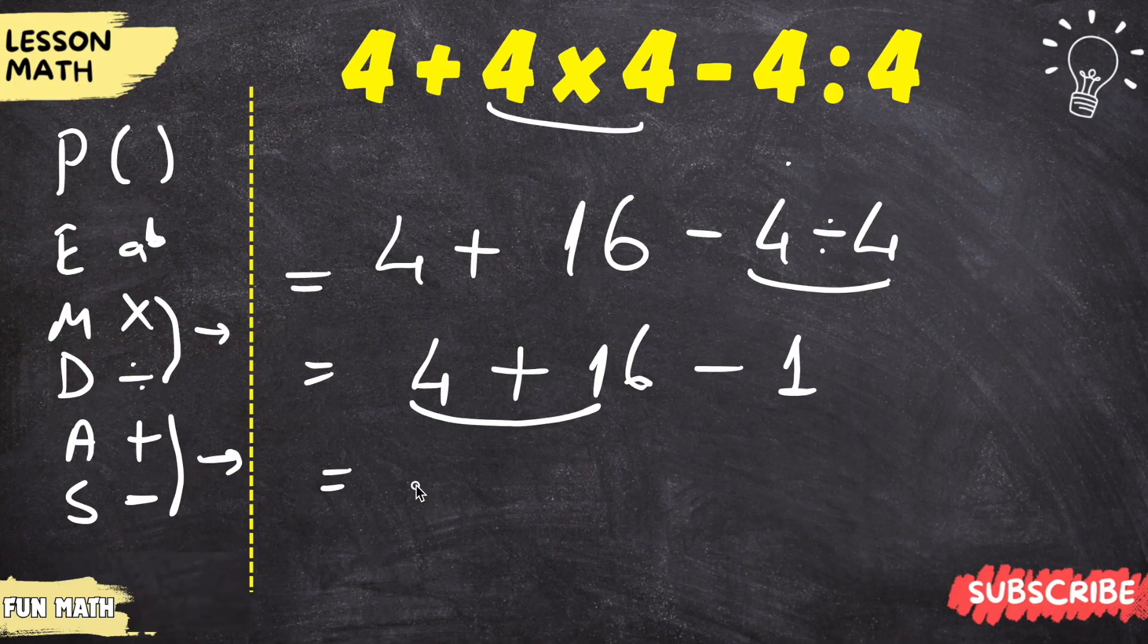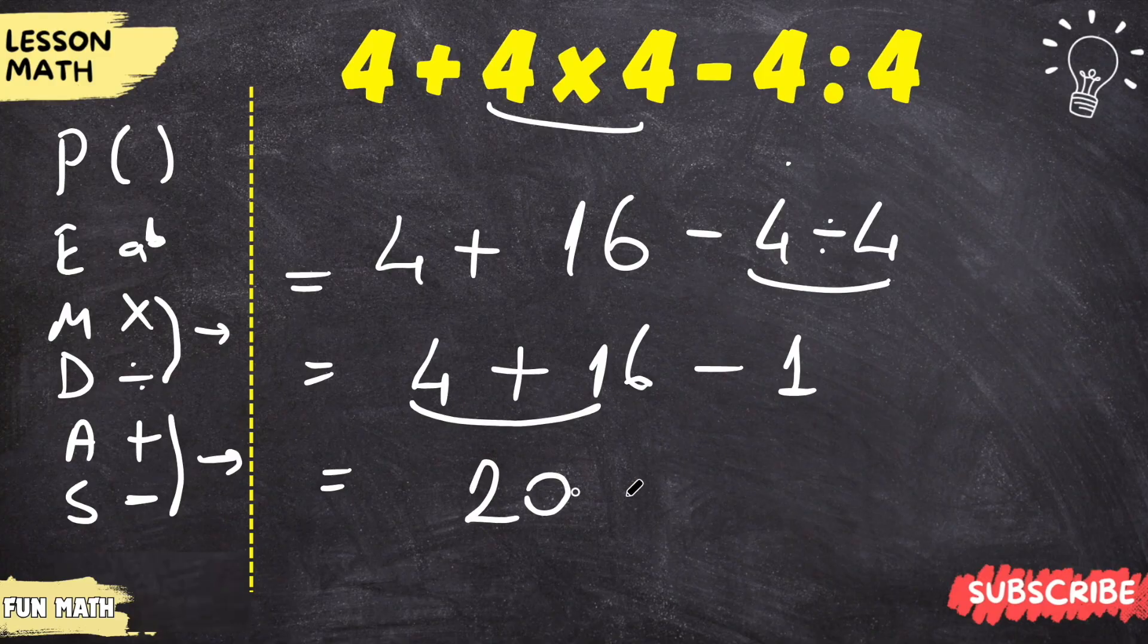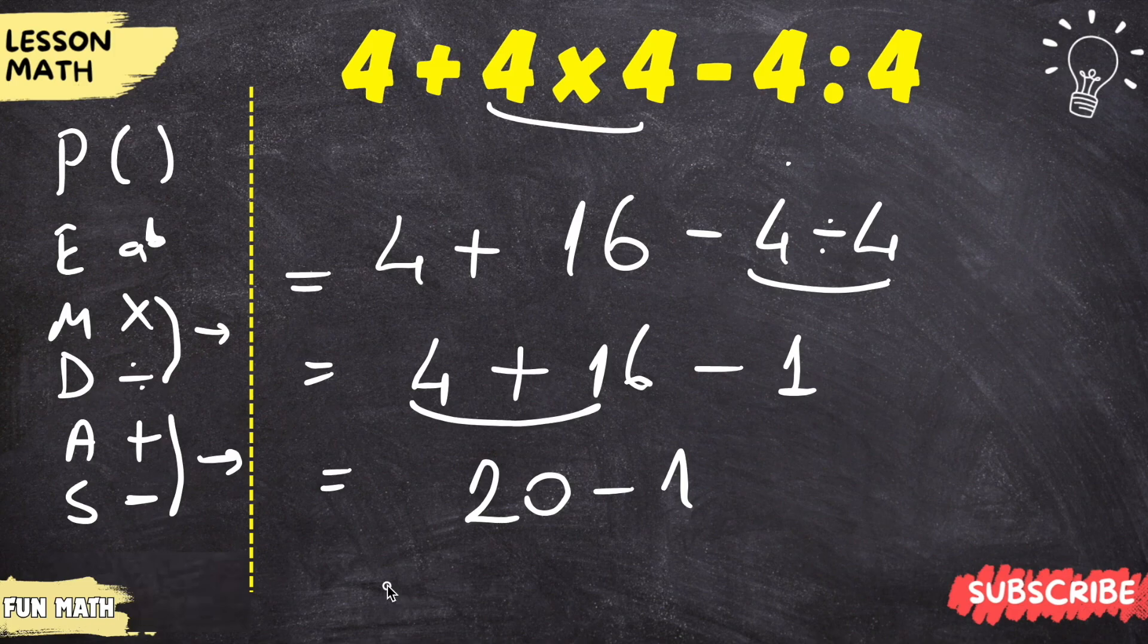So, addition first. 4 plus 16 is 20. Now 20 minus 1. If we subtract 1 from 20, the answer is 19.